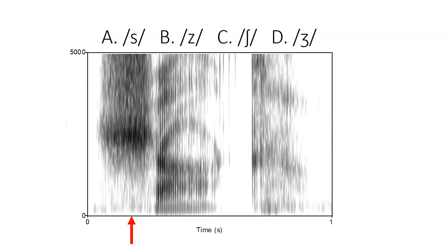Here we have a monosyllabic word that starts with a fricative consonant. If we look at the acoustics of this fricative, it has an energy concentration in the mid-frequency range and also no evidence of periodicity or a voice bar. So among our four choices, the voiceless palatal fricative SH seems like our best option.